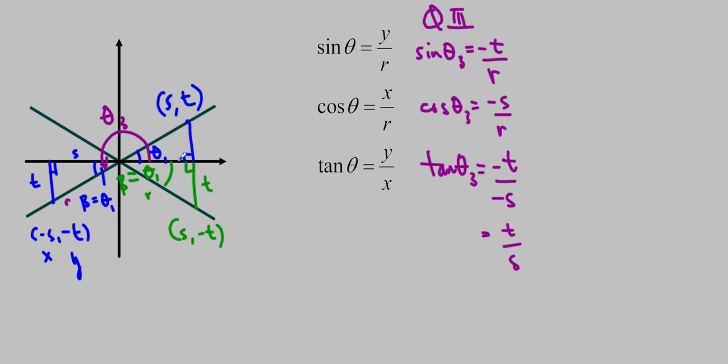Then if I draw my principal angle, again, starting at the initial arm and going in the positive direction, all the way to the terminal arm, I'm going to call that theta 4, I can find the sine, cos, and tan of that. So in quadrant 4, sine theta 4 is equal to negative t over r. Cos of theta 4 is equal to s over r, because now s is the positive one. And tan of theta 4 is equal to negative t over s.